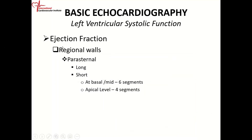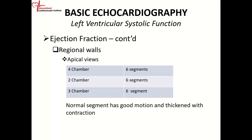The parasternal long axis view is not used too much in assessing regional walls — mainly the short axis and the apical views are used. In the four-chamber view you have six segments, in the two-chamber view you also have six segments, and in the three-chamber view you also have six segments.